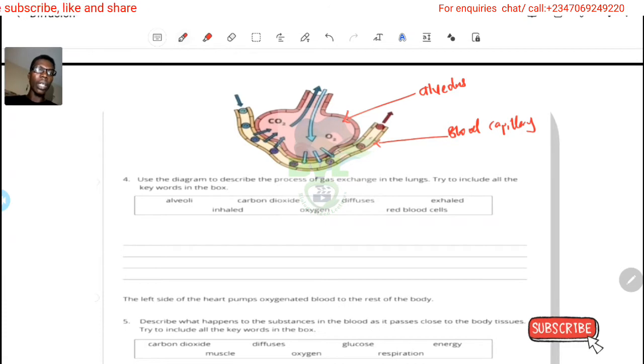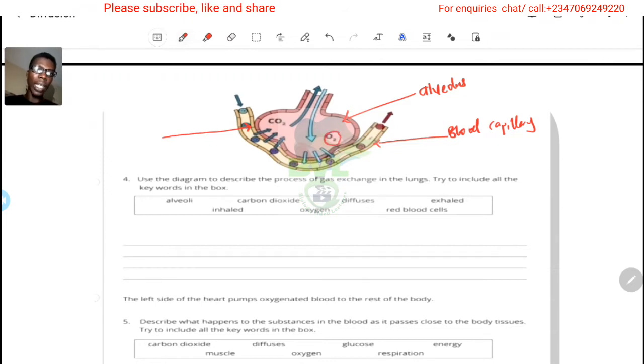Now we have alveoli inhaled, carbon dioxide, oxygen, diffuses red blood cells and exhaled. So these cells are red blood cells actually, but some are oxygenated or some are deoxygenated. Of course, you can see oxygen moving in here and carbon dioxide going into the alveolus. So this explanation is to guide us. Let's write it this way.